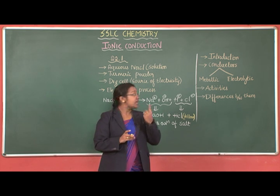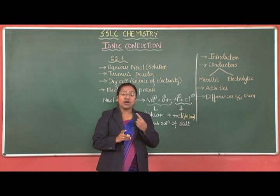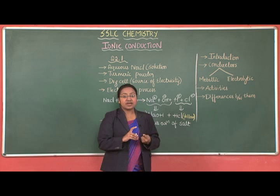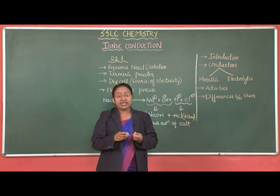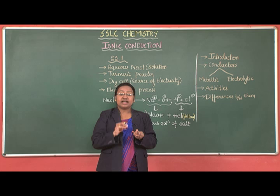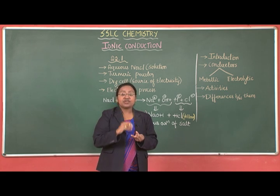Recall your definitions. Electrolytic conductors are those conductors which conduct electricity in the form of ions in aqueous solution or in molten state. Examples include salts, acids, and bases. Metallic or electronic conductors conduct electricity mainly due to the flow of delocalized or mobile electrons. This includes metals, alloys, and a few non-metals like graphite — the only non-metal that conducts electricity, and an allotropic form of carbon.